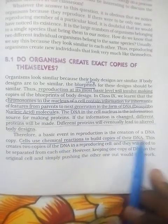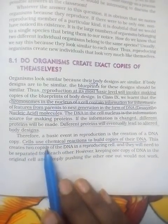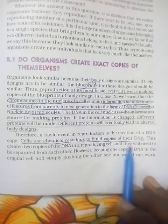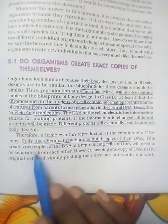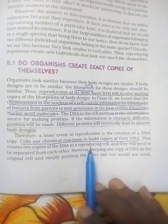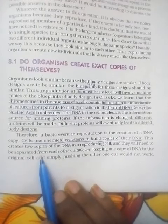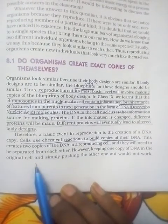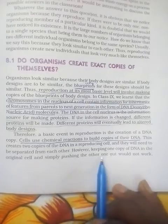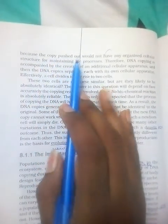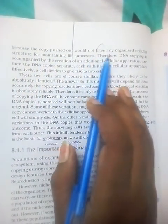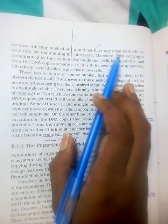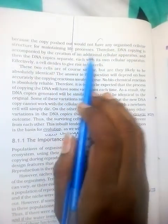A basic event in reproduction is the creation of a DNA copy. Cells use chemical reactions to build copies of their DNA. This creates two copies of the DNA in a reproducing cell, and they will need to be separated from each other. However, keeping one copy in the original cell and simply pushing the other out would not work, because a copy pushed out would not have any organized cellular structure for maintaining life processes.